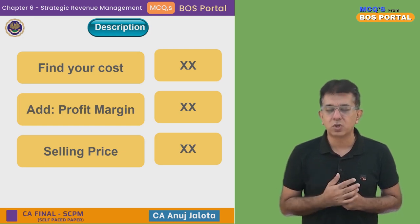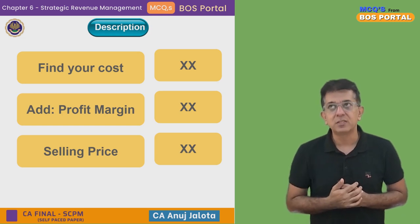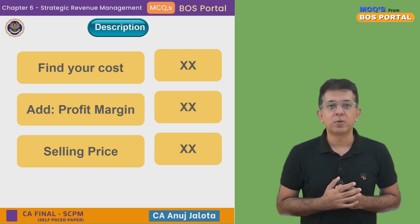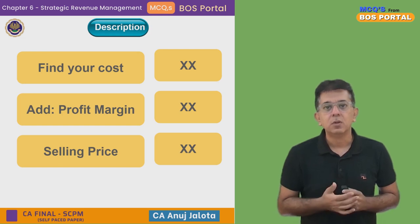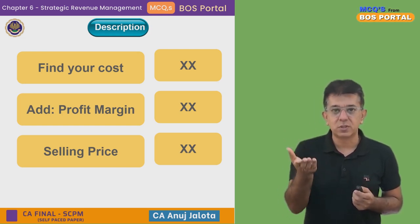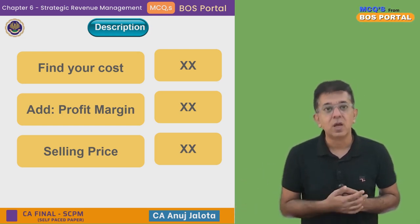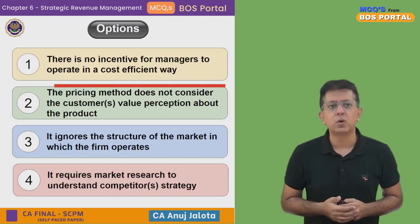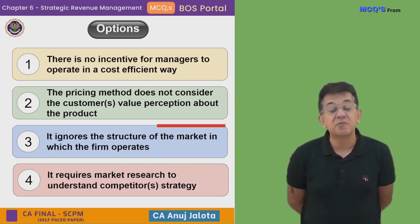Ultimately it is the customer who has to buy your product. For example, if my cost of making one batch of SCPM is 20,000 rupees per student and I want a profit margin of 50,000, I'd sell the course for 70,000 — but nobody would be interested, because students feel it's a self-paced course and marks aren't counted, so why pay so much? That's exactly why ignoring customer perception is a real drawback.